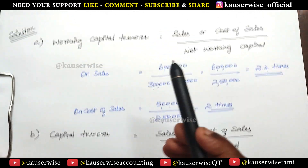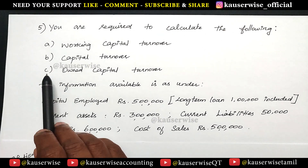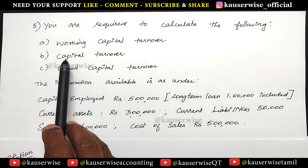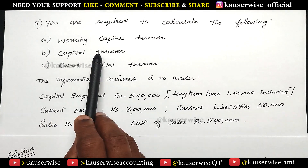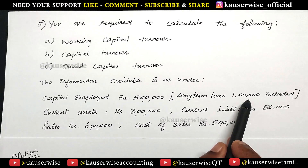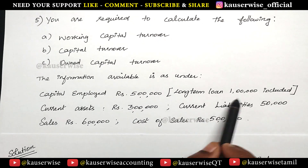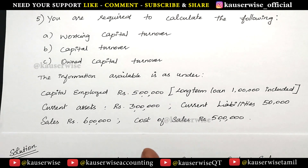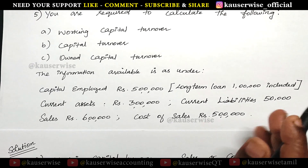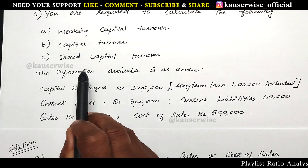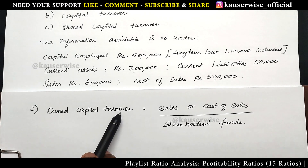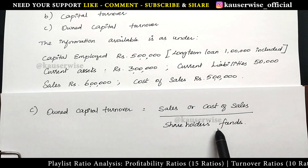Now we are going to find out the third one, that is owned capital turnover ratio. There is a difference between capital turnover and owned capital turnover. In capital turnover we take the entire capital employed, inclusive of long term loan. Whereas owned capital means excluding debt — that is only equity. Shareholder fund alone is taken into consideration. So total capital employed minus long term loan gives you the equity shareholders fund. The formula for owned capital turnover is sales or cost of sales divided by shareholders fund.